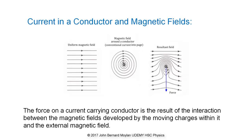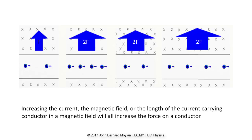This results in a force at right angles to both the current and the external magnetic field. The force experienced by a current carrying conductor is directly proportional to the strength of the magnetic field, as the stronger the magnetic field, the greater will be the force experienced by each charged particle moving within the conductor. The force is also directly proportional to the number of charged particles moving through the conductor, or the current, as the force on the conductor is the sum of the forces experienced by the charged particles.